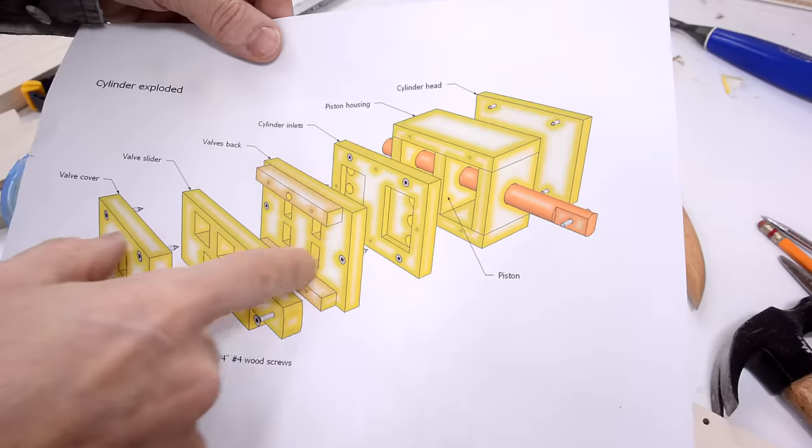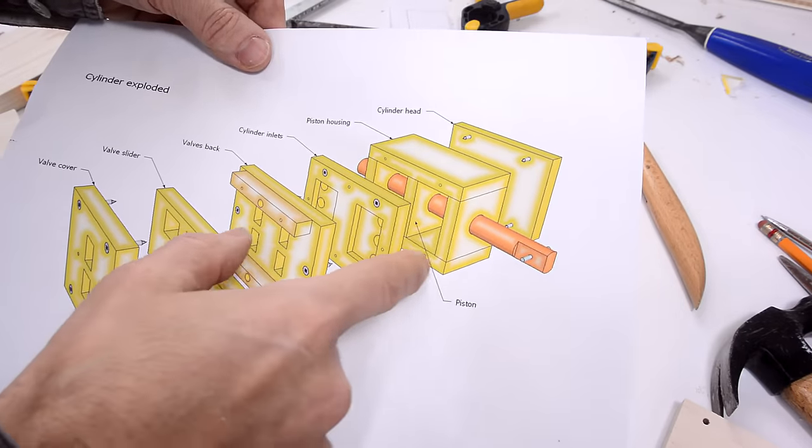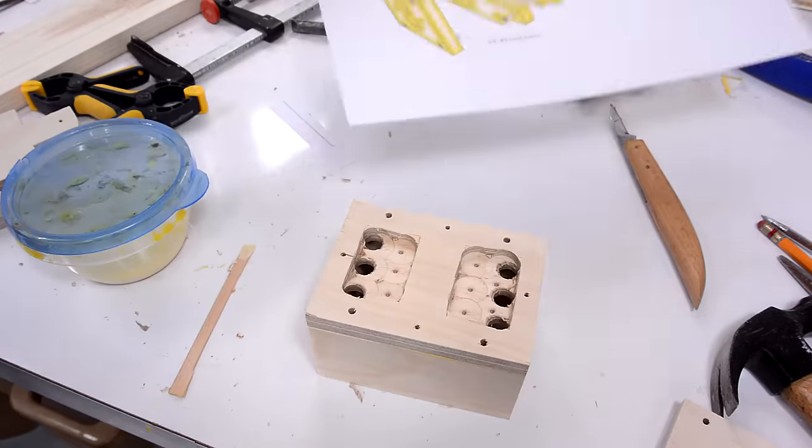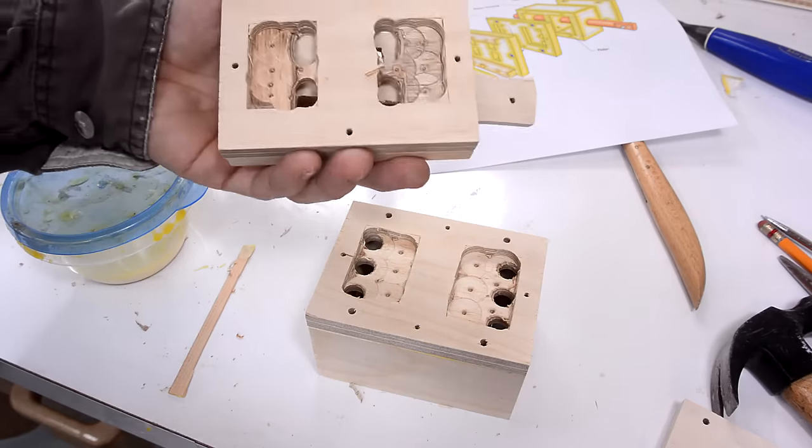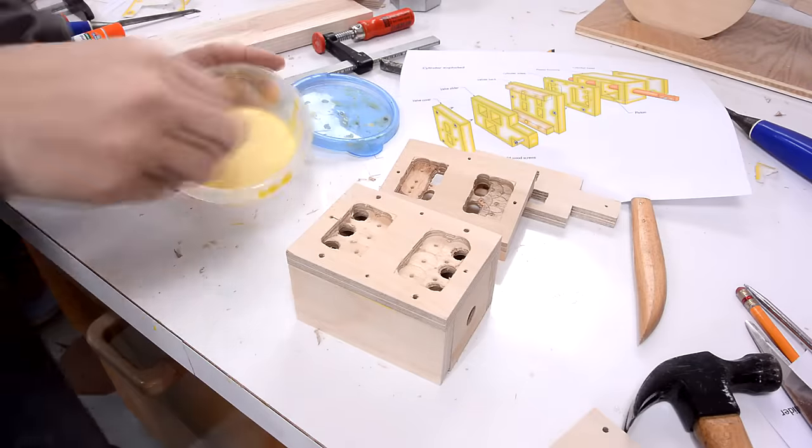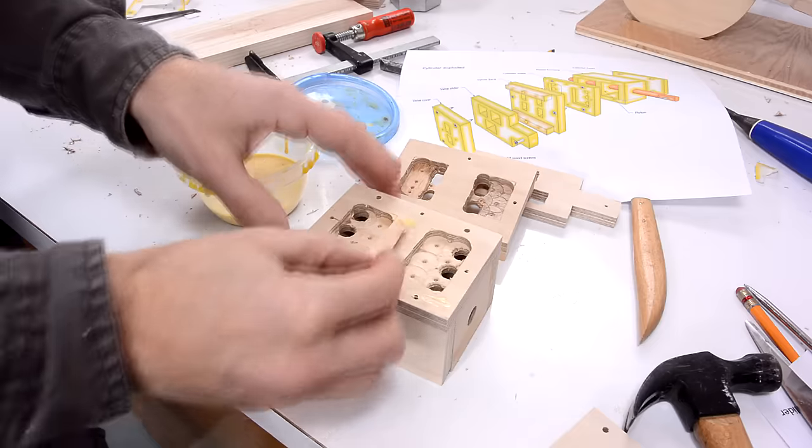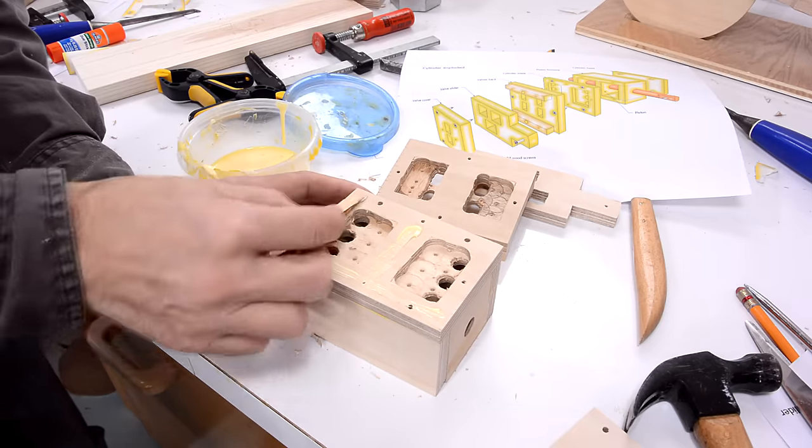In the plans I have all these layers screwed together. But I already glued this part. And I think I'm also gonna glue this part. Partially because I'm lazy and also because I already know this is gonna work. And with all this glue in here, I don't have to worry about how good the seal is gonna be because the glue seals it off.